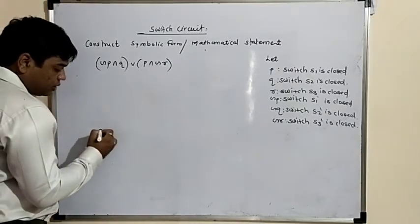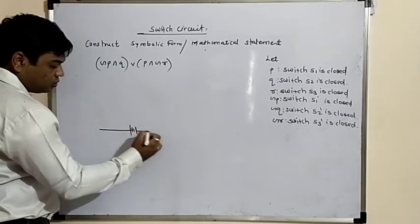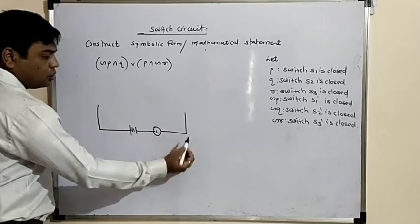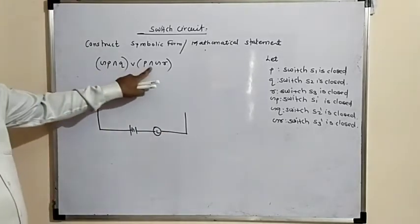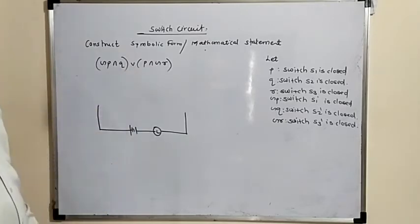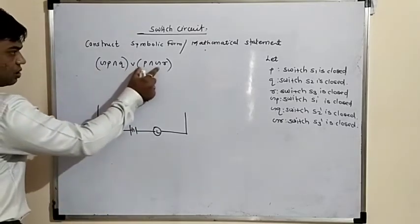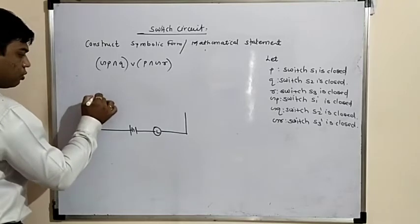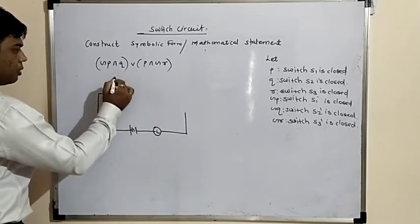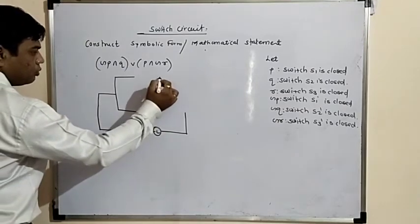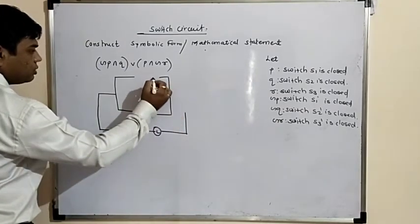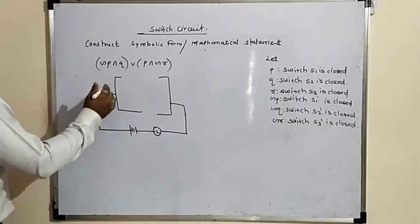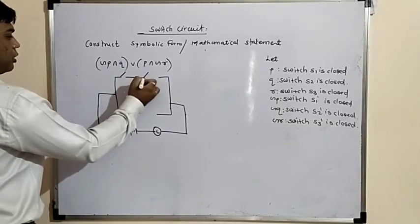The circuit always has a lamp and switches. There are three logical connective channels. These both are in series and parallel with these two statements. So we are going to draw the circuit structure. This is what: negation P and Q, and P and negation R.